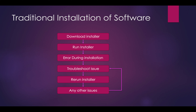Now, when we install a software, we will follow the flow. We will download the installer and install the installation package. If you look at the errors, you can't install it directly. But in most cases there will be errors. If you look at the error, you can troubleshoot it.